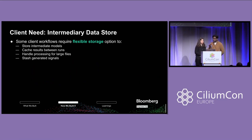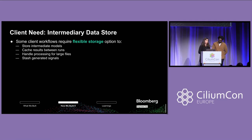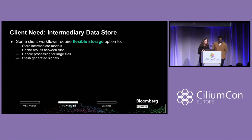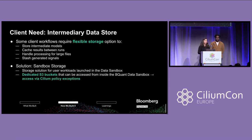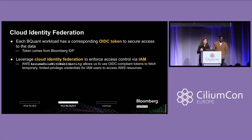Now, this by itself is already super useful for us. But we decided to take it a bit further. We built on the capabilities of the data sandbox to build intermediary data storage. We found that some of our clients had workflows that required flexible storage — from storing intermediate models to handling cache results between runs of jobs, to handling processing for really large files or stashing generated signals. So what we built on top of this functionality was what we call sandbox storage: dedicated S3 buckets that can be accessed from within the BQuant sandbox, with access coming from exceptions in our Cilium policy and through integration with cloud identity federation.